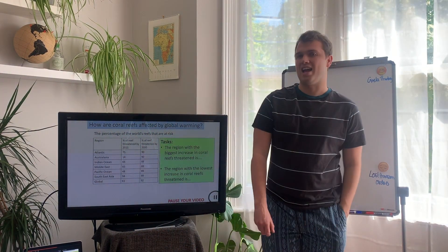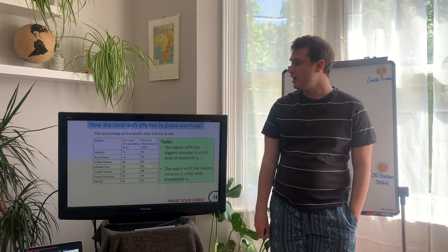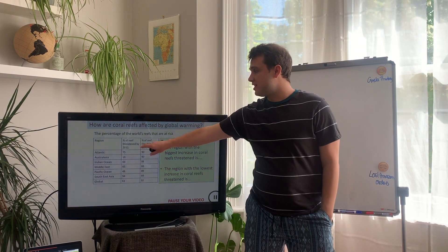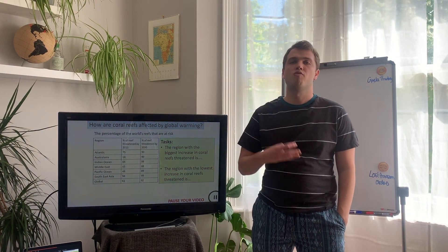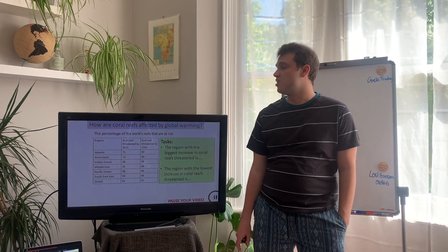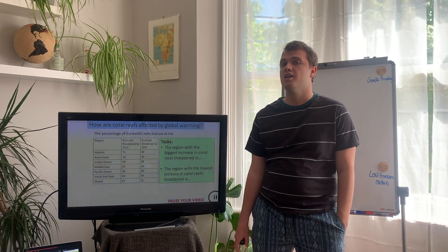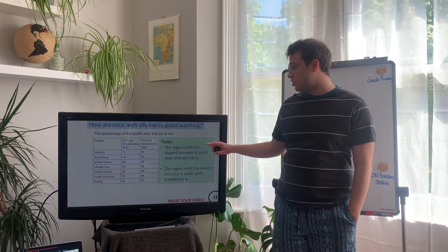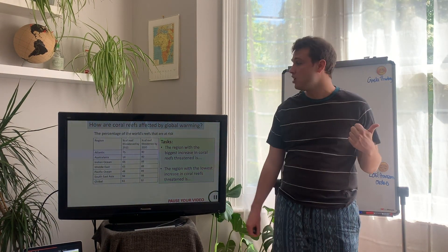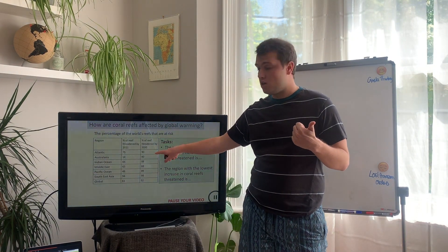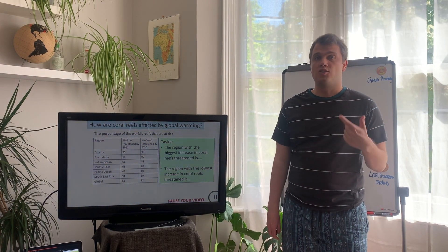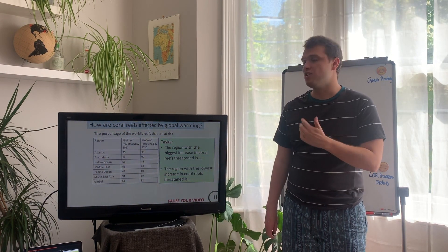We're going to do a little bit of maths and stats. On the board is a list of our main regions that have coral reefs, with the percentage threatened in 2011 and the predicted percentage that will be threatened by 2030. Copy out these two sentences and finish them: which region has had the biggest increase in risk between our two figures, and which one has had the lowest increase?